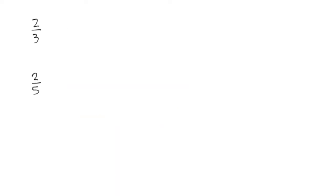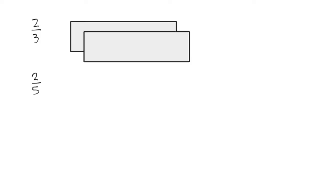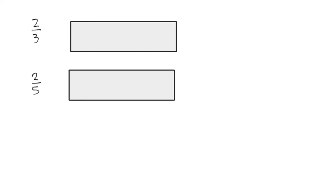Let's do the same thing here, only this time we have 2/3 and 2/5. The first thing I'm going to do is draw a rectangle to represent 2/3 and the same size rectangle to represent 2/5. You always have to have the same whole in order to compare fractions — if one rectangle were shorter than the other, that's not a fair comparison. So you have to have equal-sized rectangles to start.